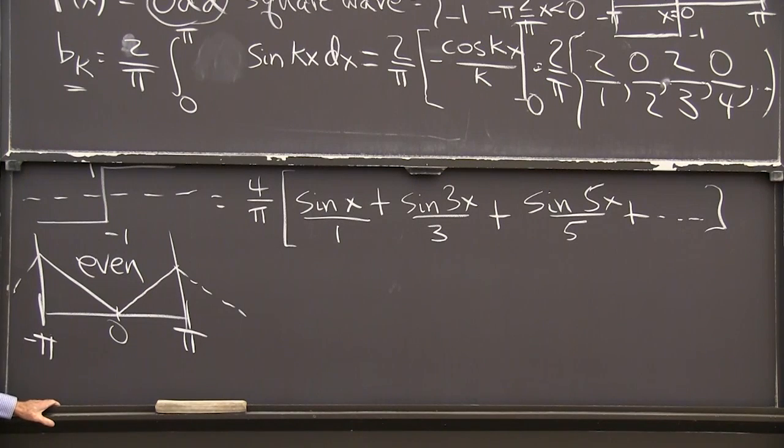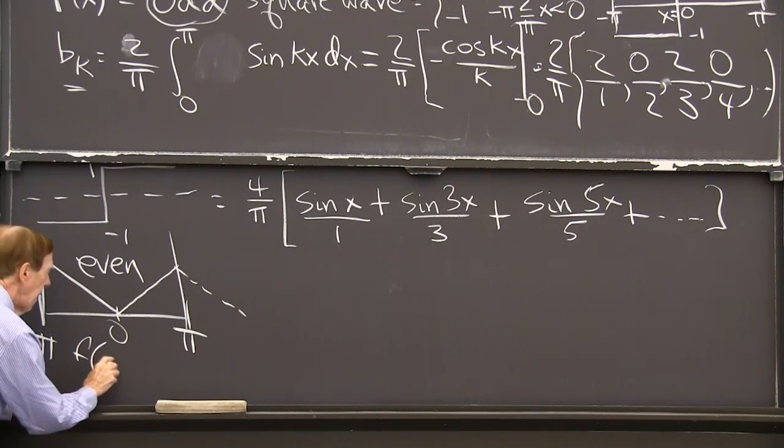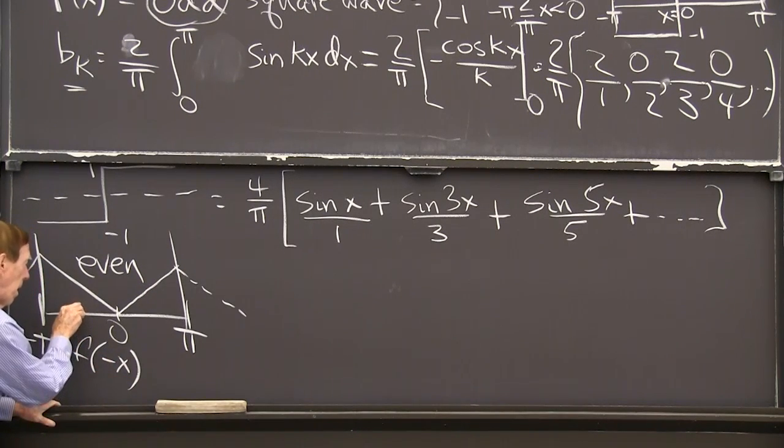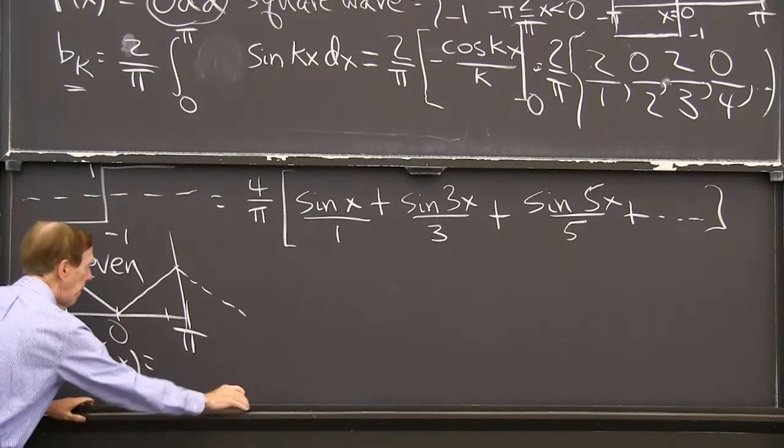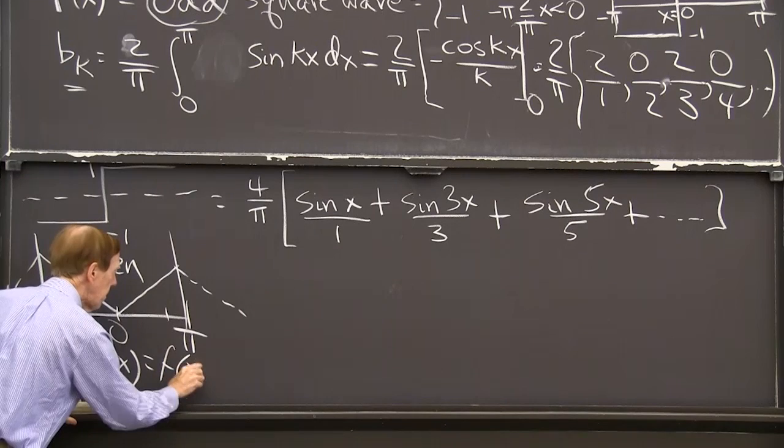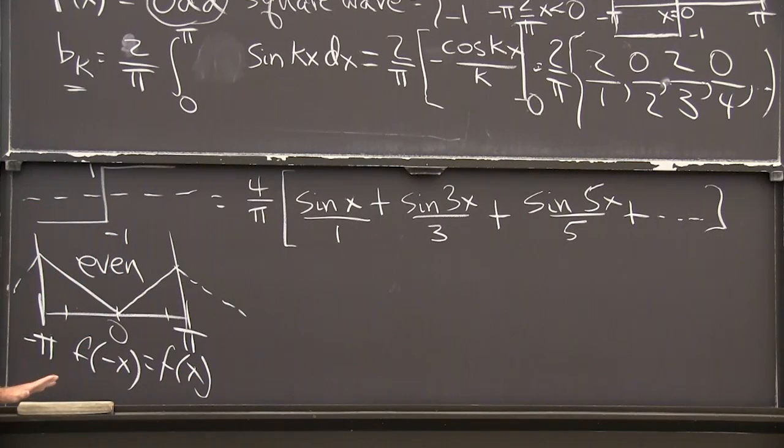And what does even mean? That means that my function at minus, there's minus x, is the same as the value at x. And what that means for a Fourier series is cosine. Even functions only have cosine terms.